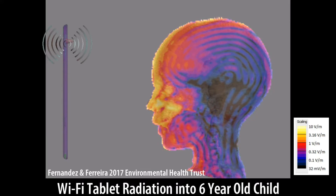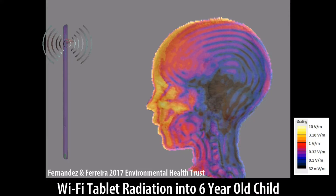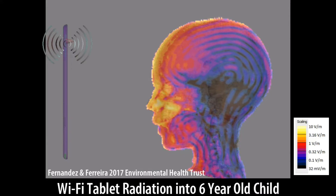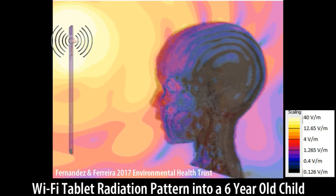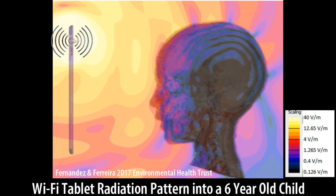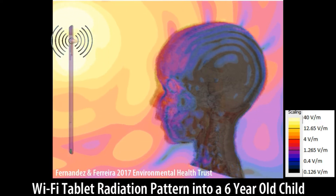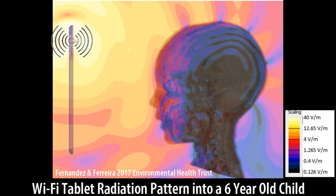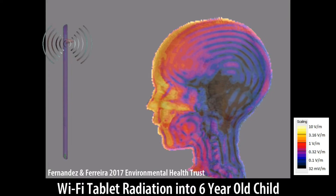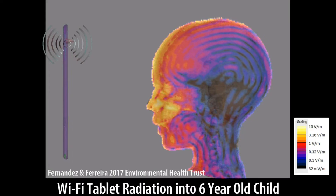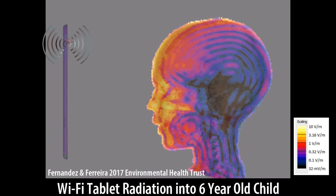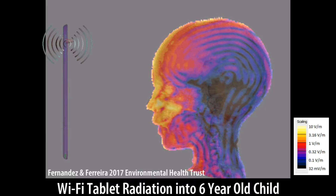These animations are slowed down by about 5 billion times. Most people are not aware that the waves of the Wi-Fi electrical field oscillate 2 billion times a second through our bodies. These wireless devices emit microwaves, and these images show the intensity of the fields absorbed into the human body.